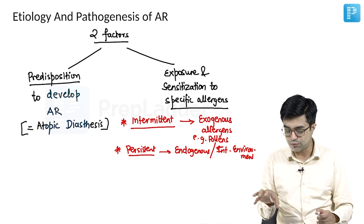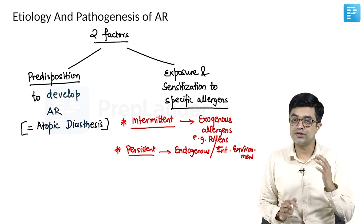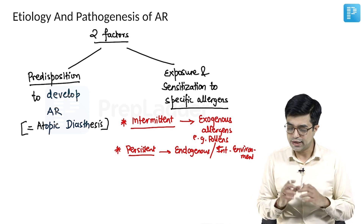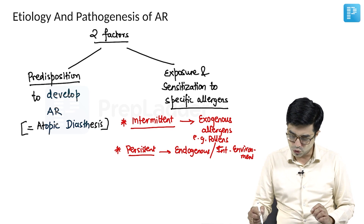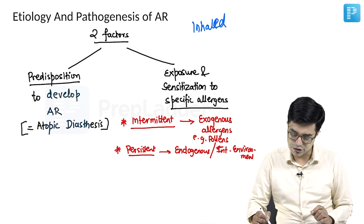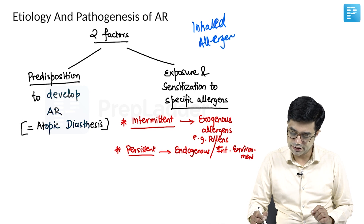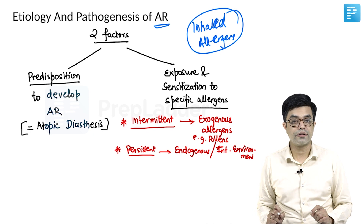Those will be responsible for persistent allergic rhinitis. And whether it is intermittent or persistent, most of them are caused by inhaled allergens. So inhaled allergens are implicated in all patients of allergic rhinitis.